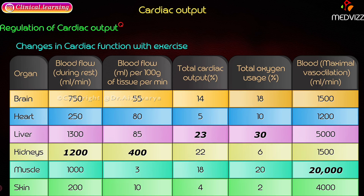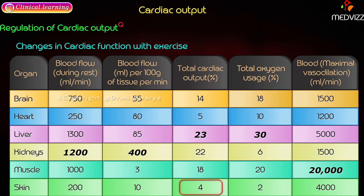Blood flow to the skin during rest is 200 ml per minute, which is 10 ml per 100 grams of tissue per minute. Total cardiac output to the skin is 4 percent, and total oxygen utilization is 2 percent. With maximum vasodilation, the skin receives approximately 4000 ml per minute.